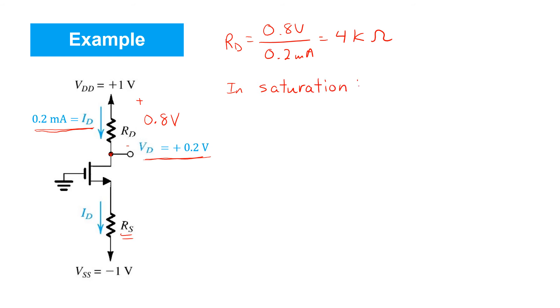So we're going to do an approximate analysis ignoring the finite output resistance of the MOSFET and simply apply the square law to find what VGS must be. I like to first find the overdrive voltage using the square law equation.